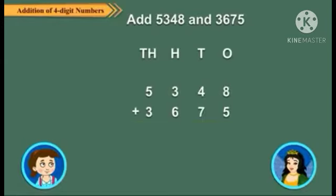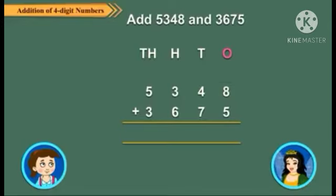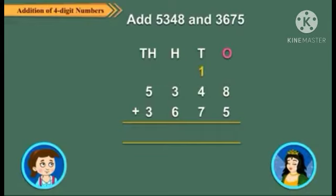Adding the ones: 8 ones plus 5 ones is equal to 13 ones, which is equal to 1 ten plus 3 ones. Carry over 1 to the tens column and write 3 under the ones column.